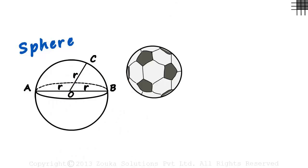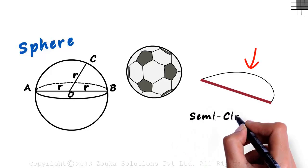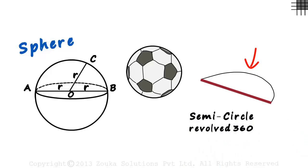Is there any other way in which we can visualize a sphere? How about we take a semi-circle on a plane? A semi-circle is half a circle and this red line is its diameter. When this semi-circle is revolved 360 degrees around the diameter, we get a sphere.